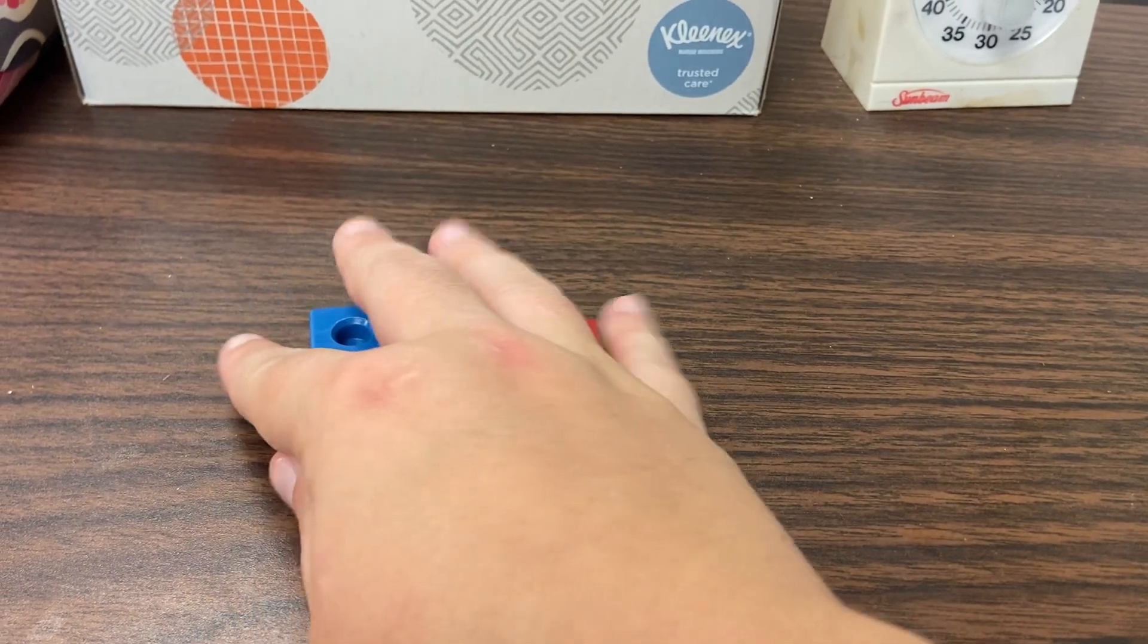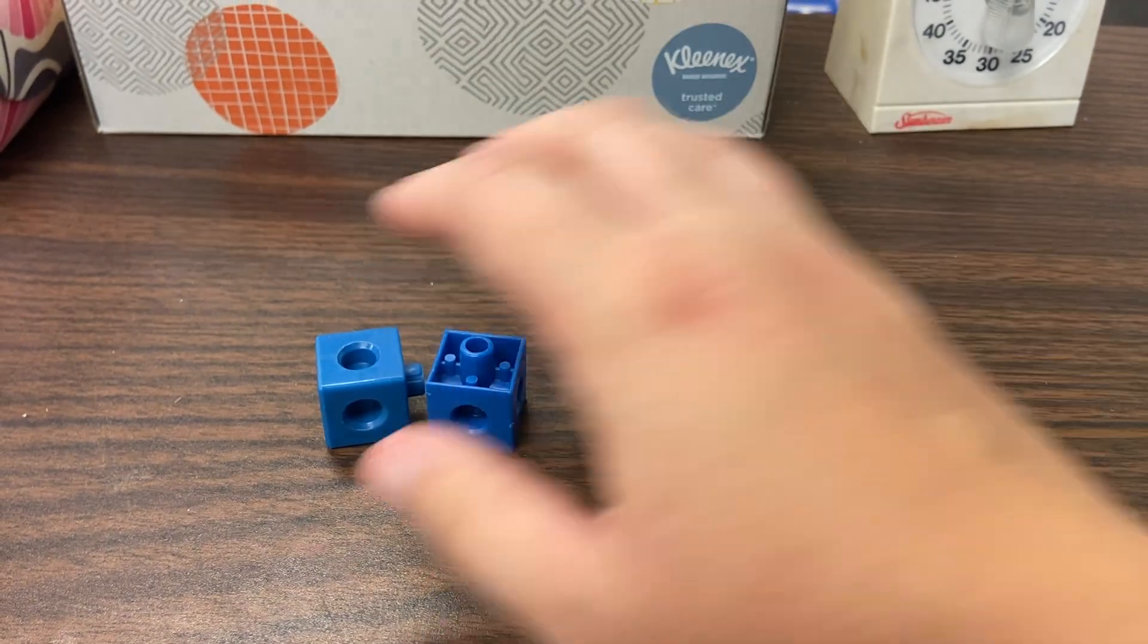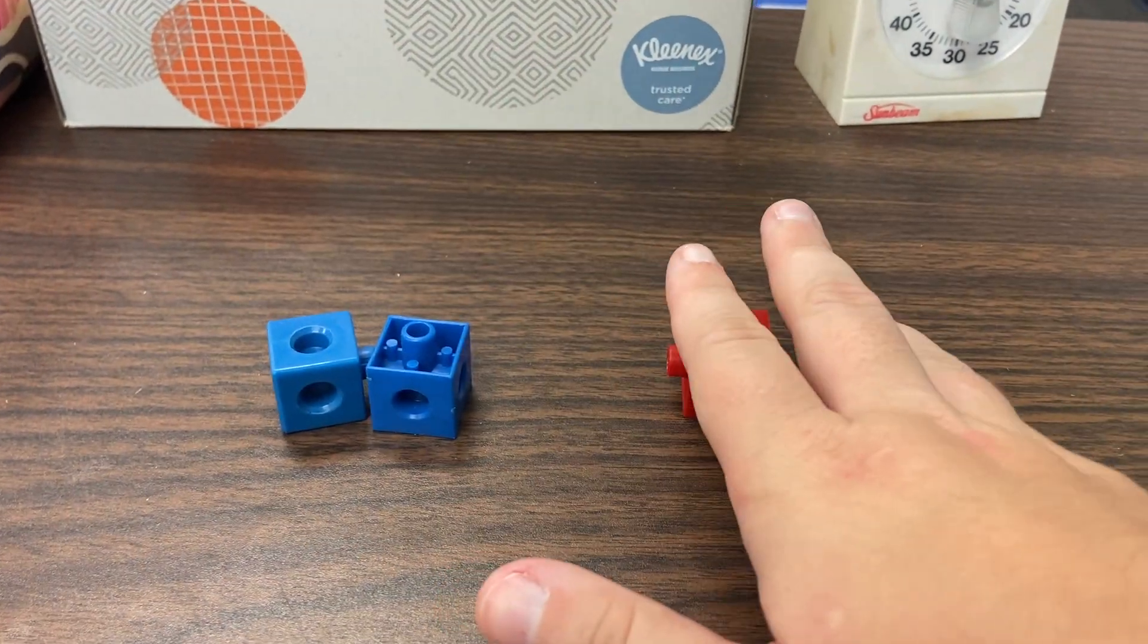How many do we have all together? We have one, two, three. So one and two is three.